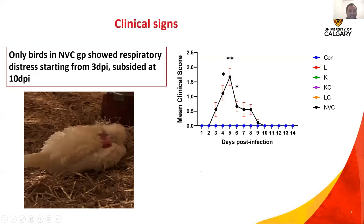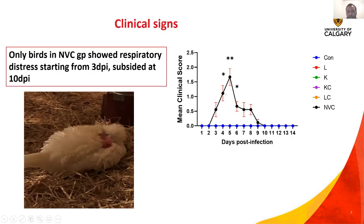Our results: for clinical signs, only birds in the non-vaccinated challenge group showed respiratory distress, which started from 4 DPI and subsided at 10 DPI. The mean clinical score in the non-vaccinated challenge group was significantly higher from 4 DPI until 6 DPI when compared to the other groups. The peak of clinical severity was observed at 5 DPI.